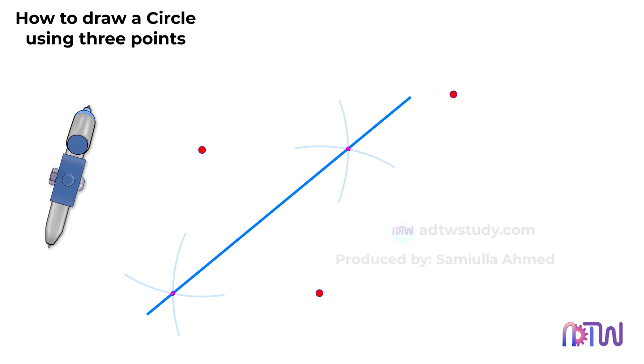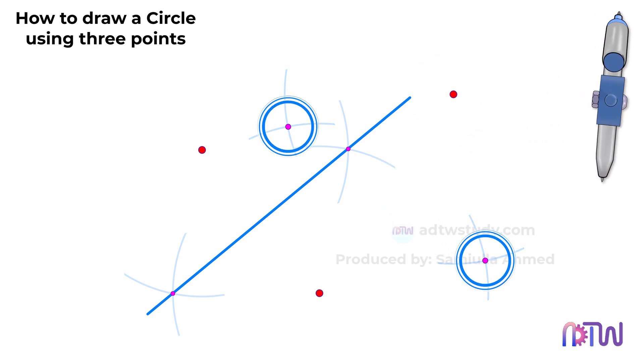Take the compass, adjust it to more than half the distance between these two points, and using them as centers draw arcs as shown. Then draw a line passing through the intersections of these arcs as well.